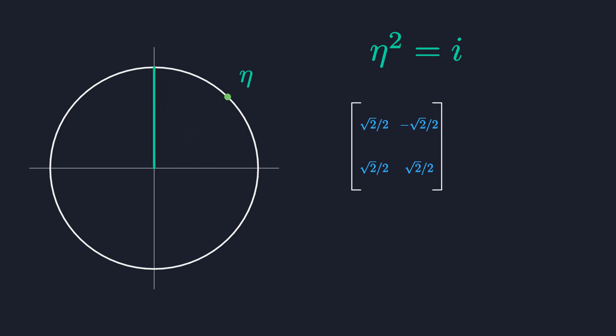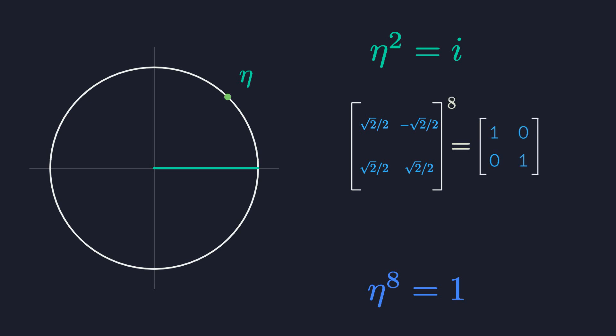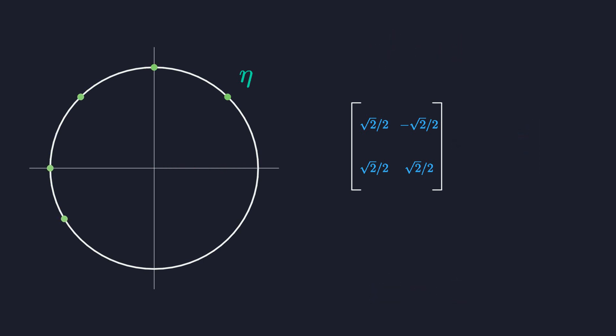Eta is an eighth root of unity — when you raise it to the eighth power, you get 1. The matrix representation is a morphism, so it maps this equation over to the world of matrices. You can verify that when you raise the matrix to the eighth power, you end up at the identity matrix. When you take all of the eighth roots of unity together, they form a cyclic group. Eta serves as a generator because its integer powers produce all other group elements, and the morphism makes sure the same thing happens in matrix land. We've also found that we can take square roots and other rational powers of these matrices.